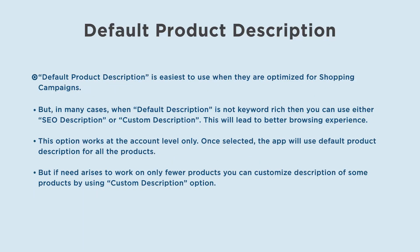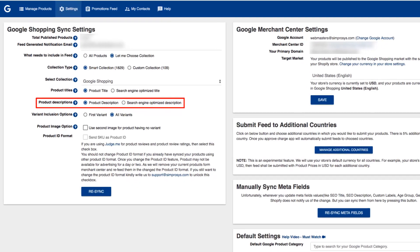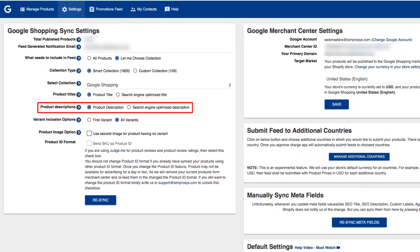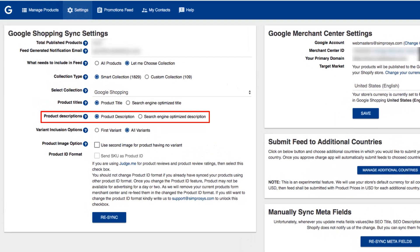Default product description is easiest to use when they are optimized for shopping campaigns. But in many cases when the default description is not keyword-rich, you can use either SEO description or custom description, which will lead to a better browsing experience. This option works at the account level only — once selected, the app will use default product description for all the products.